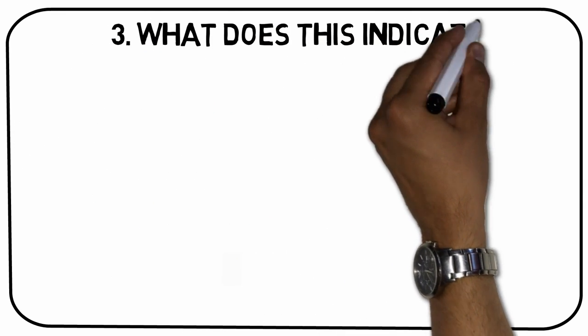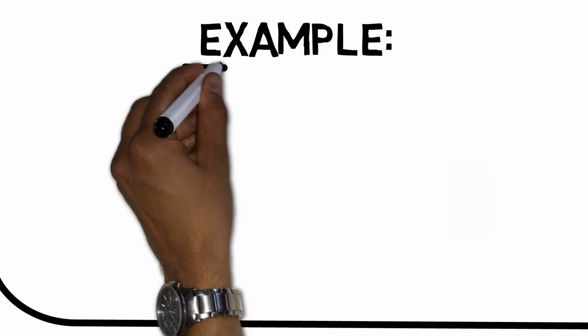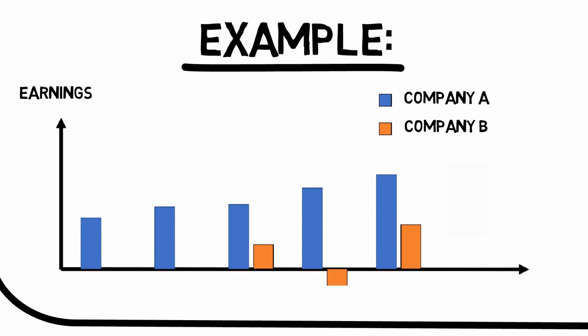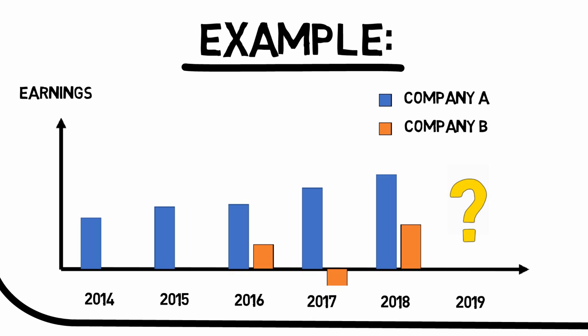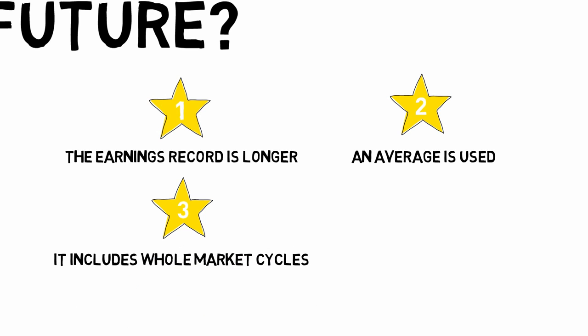Takeaway number three: What does this indicate for the future? We've kind of answered the first question — what are the true earnings of the past? Now for the second: what does this indicate for the future? Past earnings give a rough indication, and you can trust this indication more if the earnings record is longer, an average is used, it includes whole market cycles, and the business is stable.